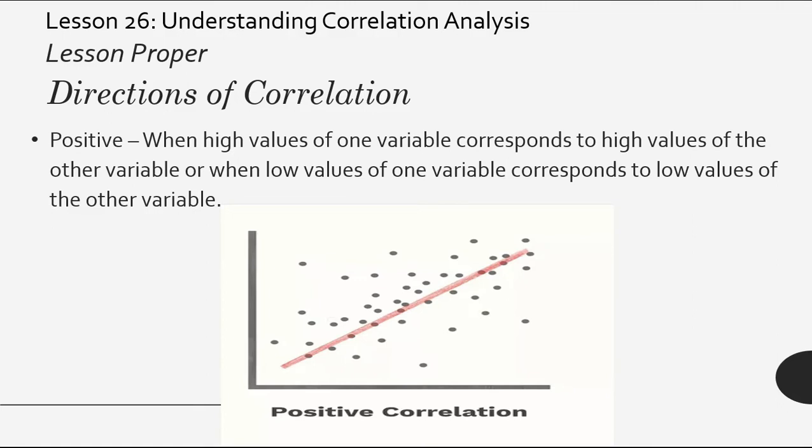Now, for the directions of correlation, we have three. First is positive. When we have a positive direction, it means that when high values of one variable corresponds to high values of the other variable, or when low values of one variable corresponds to low values of the other variable. So when both are high or both are low, we have a positive direction for the correlation. Here's an example. How will we know? When the direction of the trend line is in the first quadrant and third quadrant of the Cartesian plane, it's inclined in this direction. That's positive.